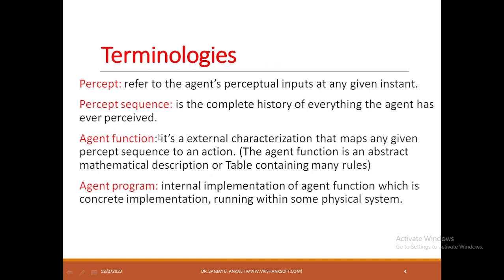Now let us start with some terms. Percept refers to understanding the current state of the environment. Percept sequence means not only the current state — you have to understand information about the entire environment. Agent function means it is an internal table that comes with all those conditions and the rules to be applied on each condition — you can say it is just an algorithm. Agent program means reading the agent function and implementing it on a real-time system. So agent program is the program that actually does a task, while agent function is the logic or algorithm to make certain things happen.